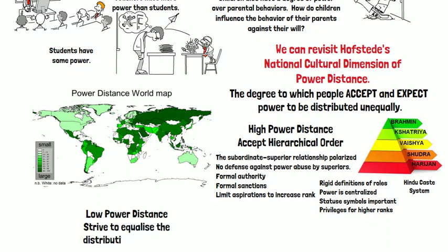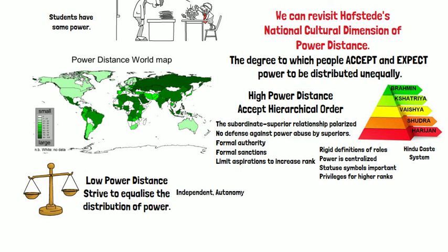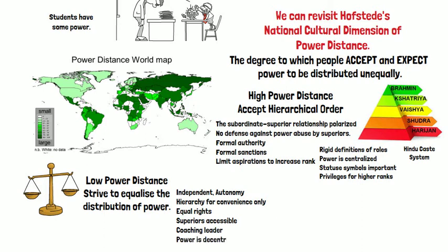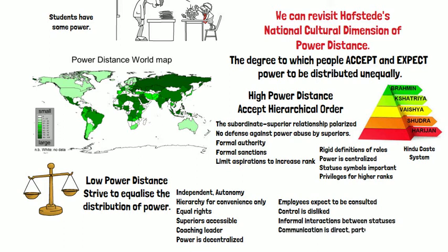Lower power distance countries strive to equalize the distribution of power. Independence and autonomy are valued. Hierarchies are seen for convenience only. There is an expectation of equal rights, accessible superiors, and a coaching leader. Power is decentralized; employees expect to be consulted; control is disliked; interactions between statuses are informal, with communication that is more direct, participative, and consensus-oriented.